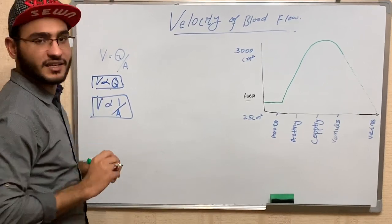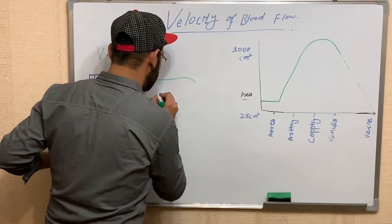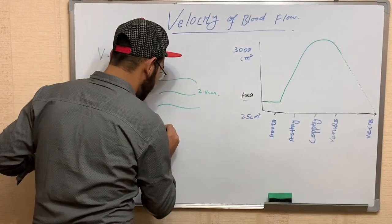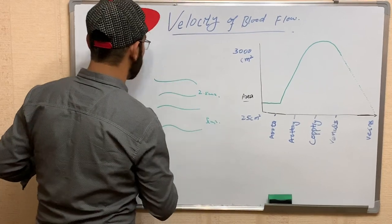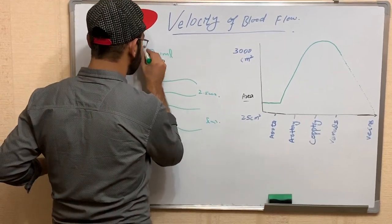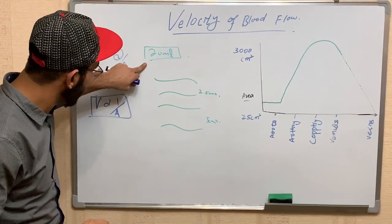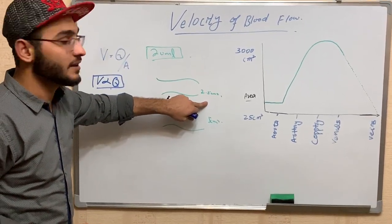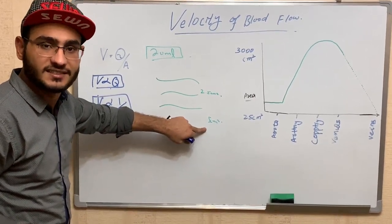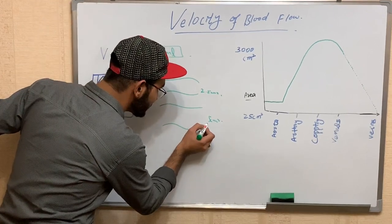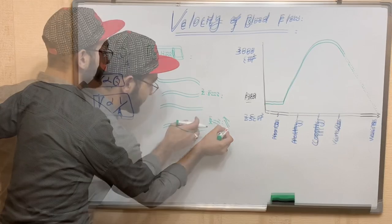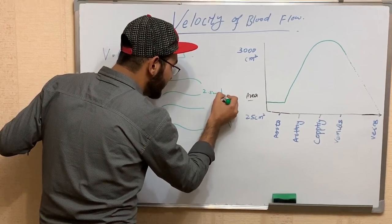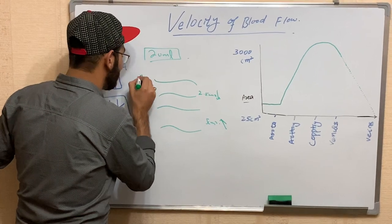If the cross-sectional area increases, the velocity of blood flow decreases. For example, there are two blood vessels — one with a cross-sectional area of 2.5 cm² and another with 5 cm². 20 mL of blood has higher velocity in the 2.5 cm² vessel compared to the 5 cm² vessel, because the larger cross-sectional area decreases the speed of blood flow.